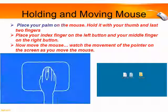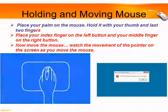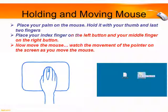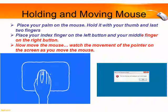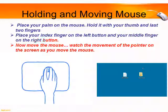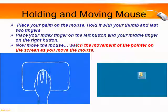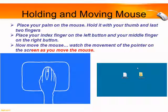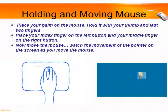Holding and moving a mouse: Step one — place your palm on the mouse and hold it with your thumb and last two fingers. Step two — place your index finger on the left button and your middle finger on the right button. Step three — now move the mouse and watch the movement of the pointer on the screen.